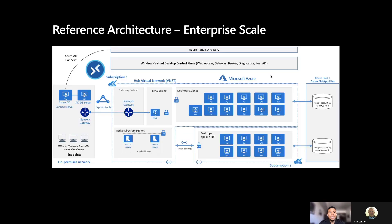Thanks, Rich. Now we'll look at the reference architecture in an enterprise scale use case. One of the things I really want to point out from this diagram is how we can have multiple subscriptions and do VNet peerings through a hub and spoke network. This is one example for an environment using Azure Virtual Desktop. The key components are all visible here, and we'll jump right in to show the different scenarios and components.